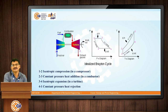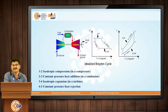In the turbine, the gas expands, causing the turbine to start rotating. This turbine is connected generally to a generator, so electricity is generated. After expansion, the exhaust gas goes outside to the environment. The turbine is also connected to the compressor to provide the input power needed to run it. This is the basic working of any gas turbine power plant.